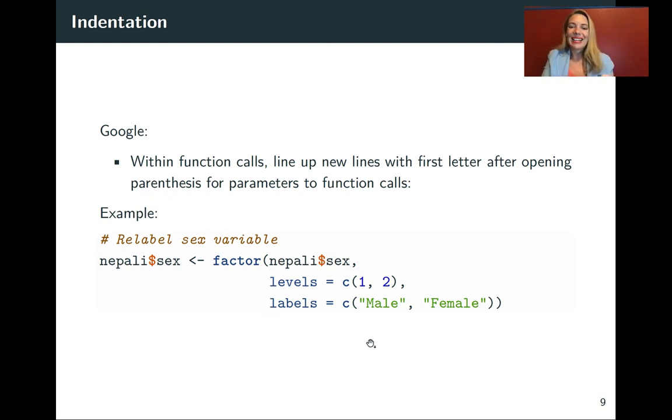If you have a call inside like here we've got kind of male and female in this concatenate that's inside the labels then this you would want to line up if you put these on new lines so you would want to go down and have this female line up with the male if you needed to do a line break in that part as well.